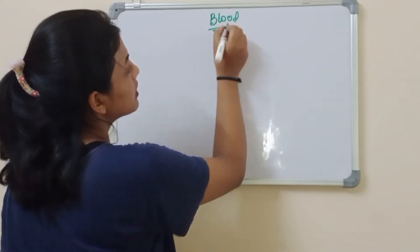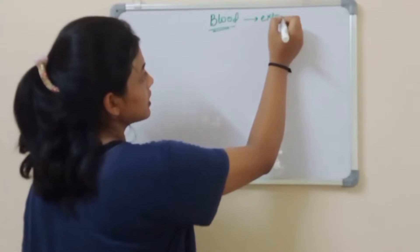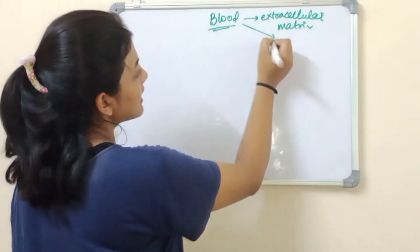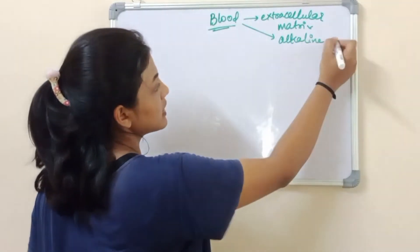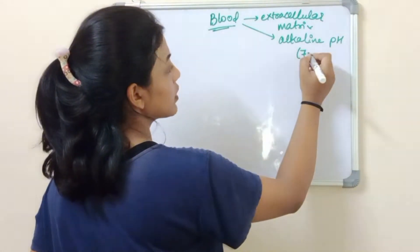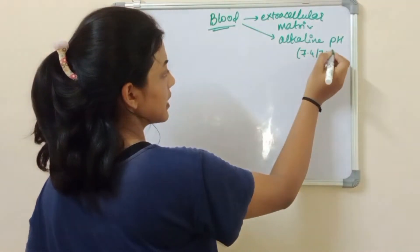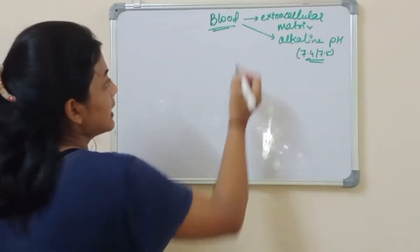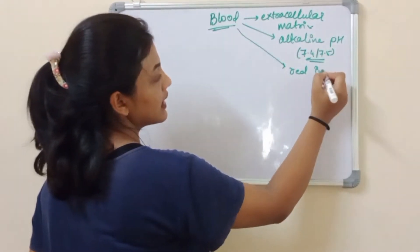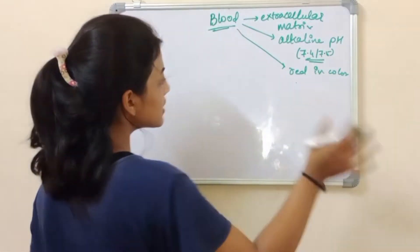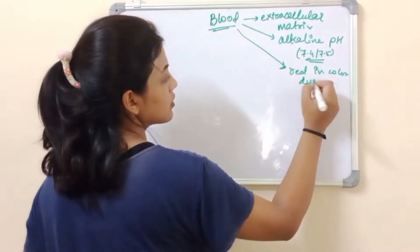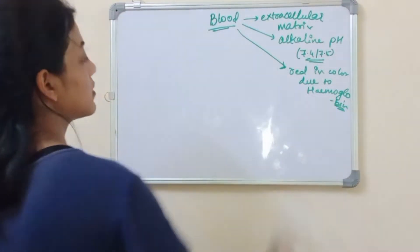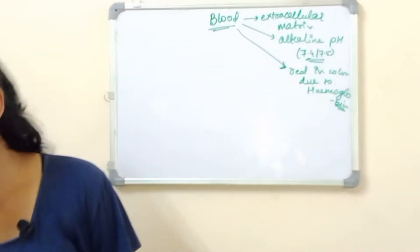Blood is the extracellular matrix. It has an alkaline pH of about 7.4 or 7.5 — slightly alkaline pH. And it is red in color, red in color in case of humans or mammals, due to hemoglobin. Hemoglobin is a red colored pigment, so the blood also is seen as red.